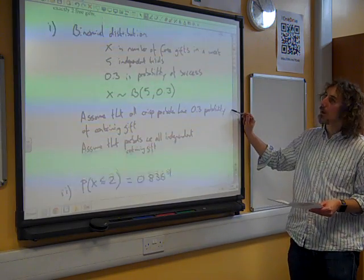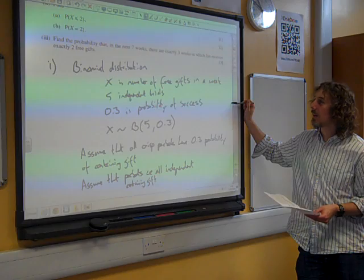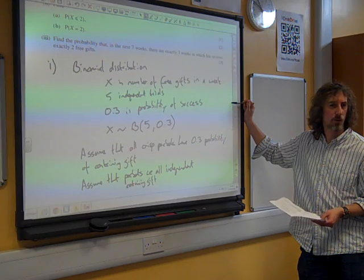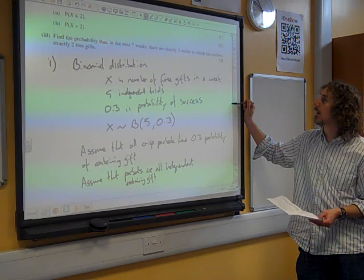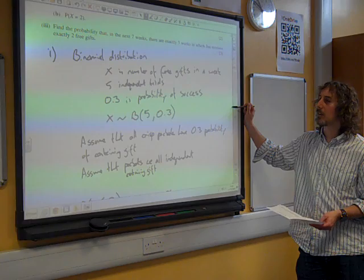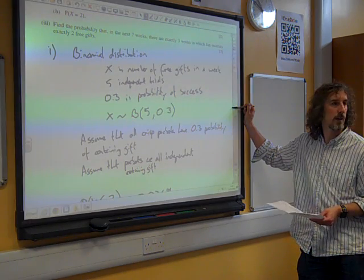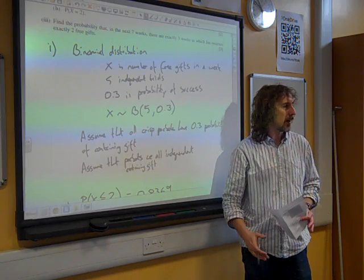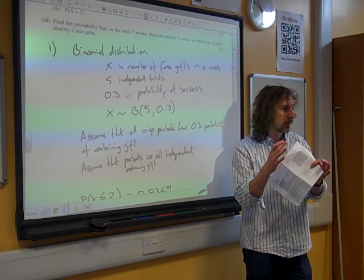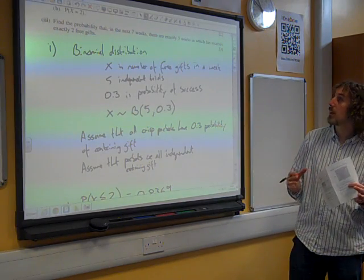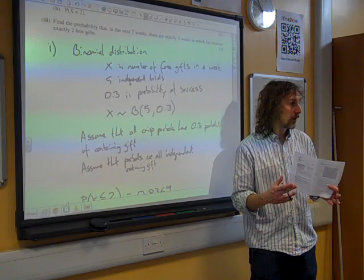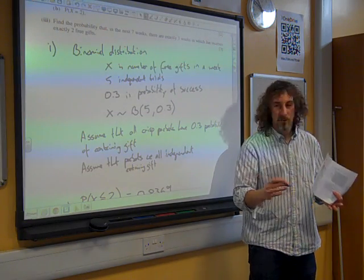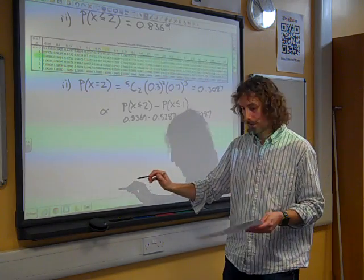The last part of this set. Find the probability that in the next seven weeks there are exactly three weeks in which Jan receives exactly two free gifts. I love the way that you read that for the first time and think, surely there's nonsense involved in that. The use of the word exactly too many times in one sentence. But find the probability that in the next seven weeks there are exactly three weeks in which she receives two free gifts. Exactly two free gifts. Well, we've now kind of set up an overall binomial distribution involving little binomial distributions, haven't we? Because we're now saying that there are seven weeks and a success, so each week is a trial, a success is receiving exactly two free gifts in a week.